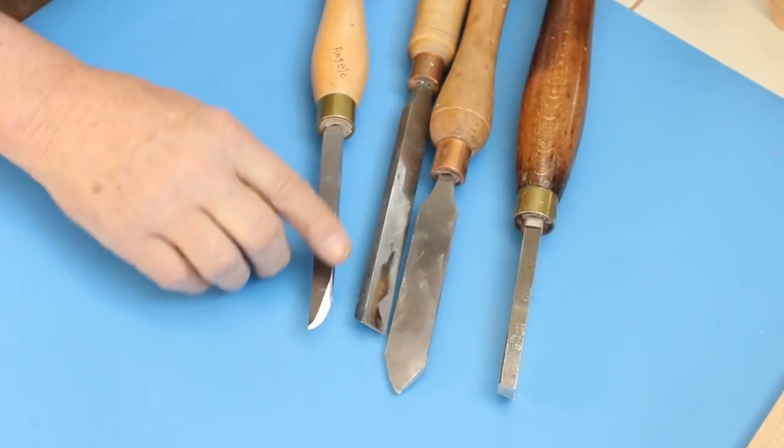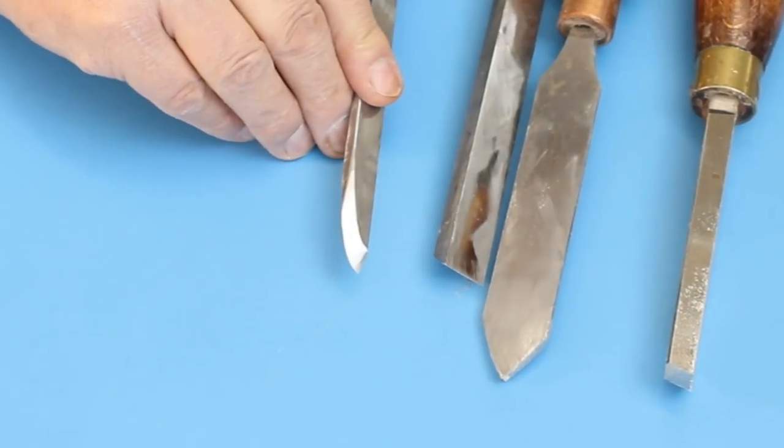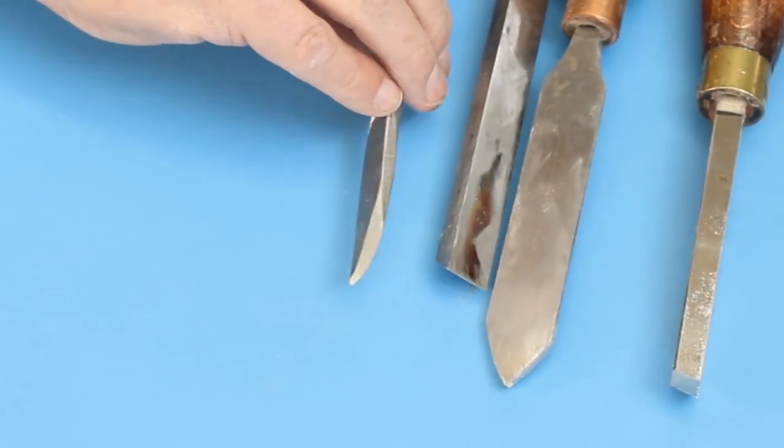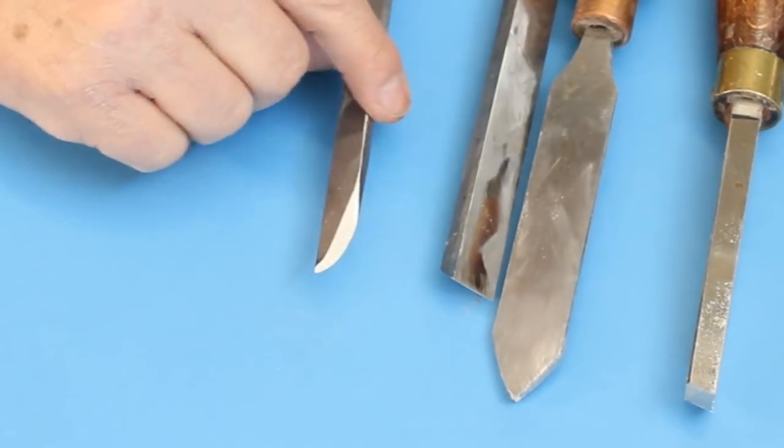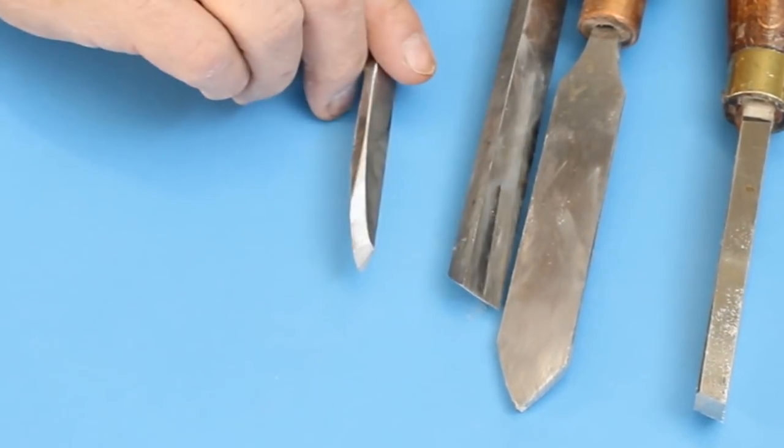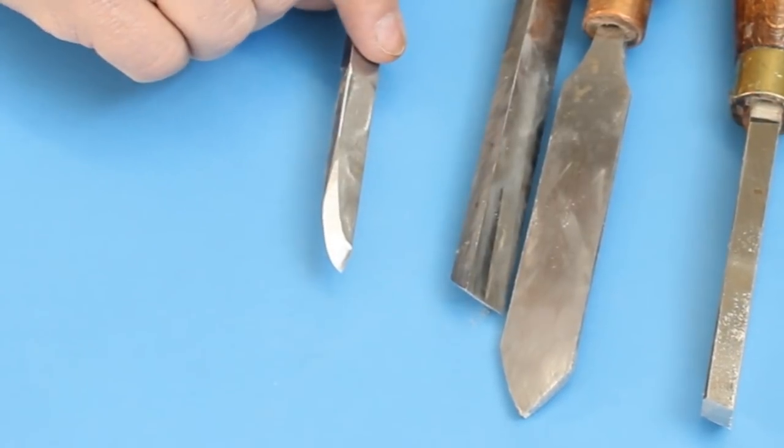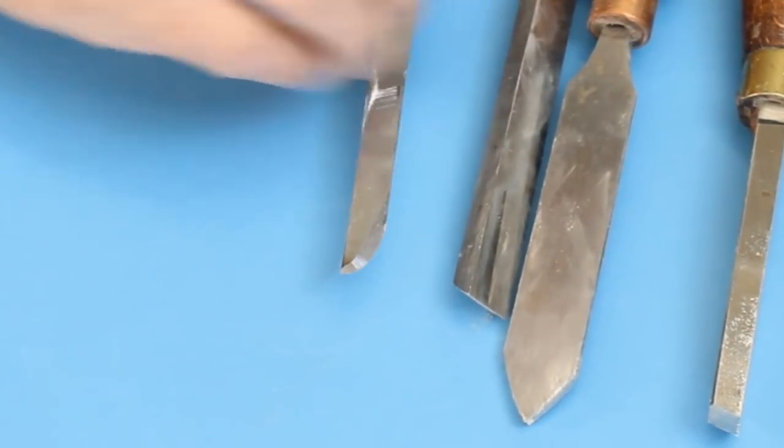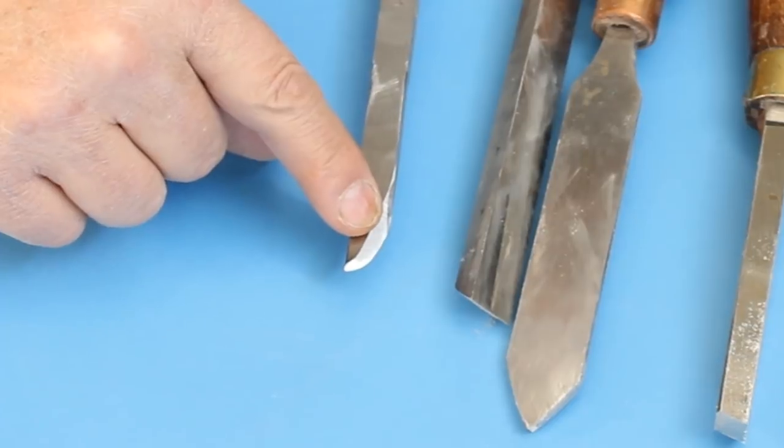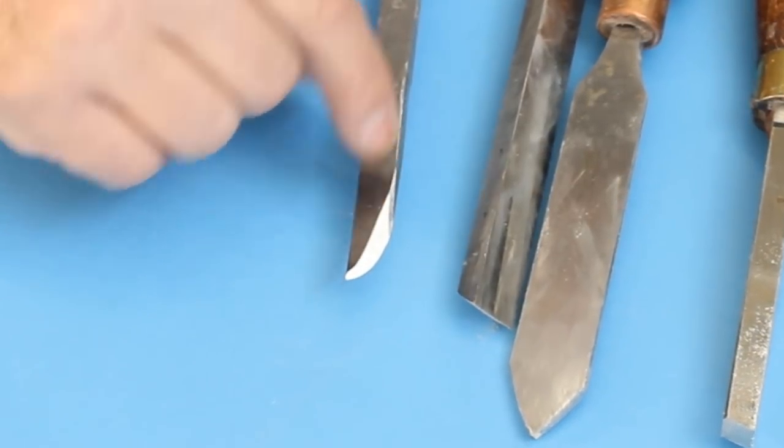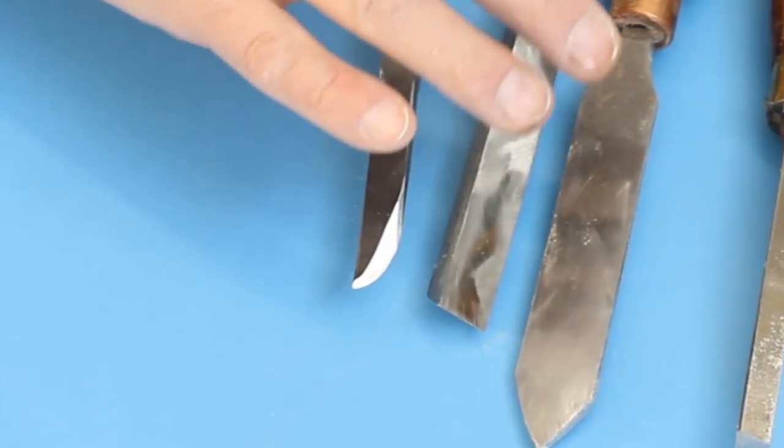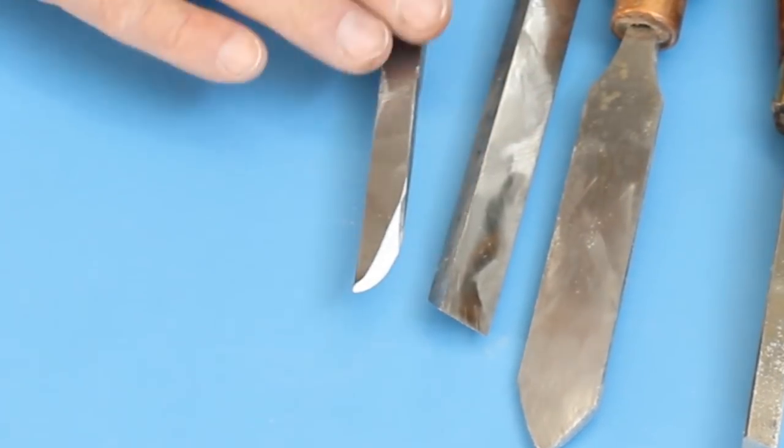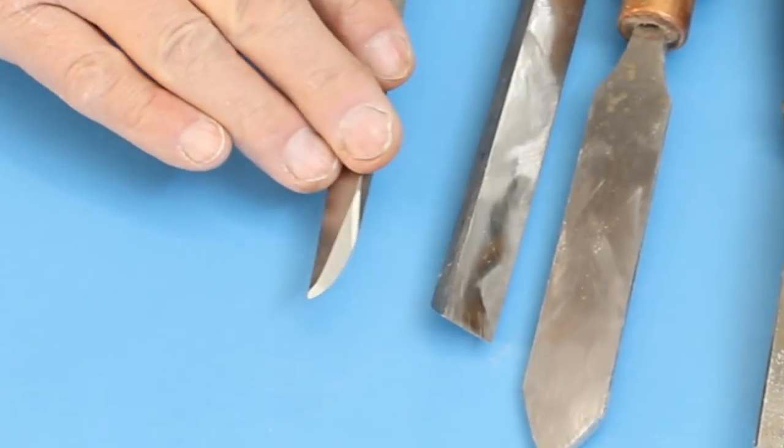And this last one is a negative rake scraper. Now the difference is I have a bevel on the top and a bevel on the bottom. And what happens with a negative rake scraper is it makes it less aggressive. You can get a bad catch with a scraper. And sometimes that catch is going to be worse than with a bowl gouge. So there are scraping tools.